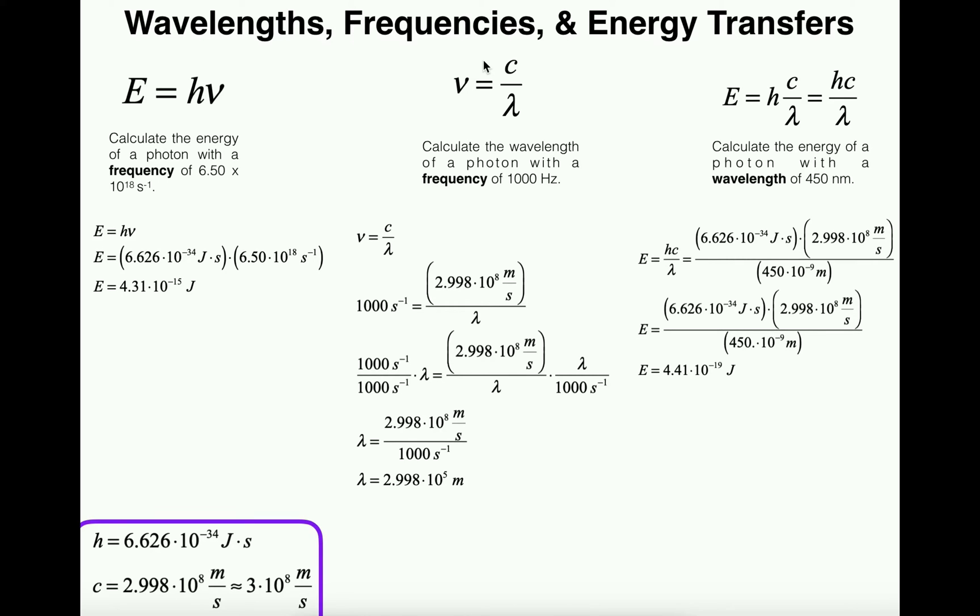This one on the far right is not a hard problem, it's just out of these three it's probably the more complicated one. Recall that from the first problem if we know the frequency and we need to calculate the energy we use this formula E = hν. Energy equals Planck's constant times the frequency. From the second problem we also know that the frequency equals the speed of light divided by the wavelength.